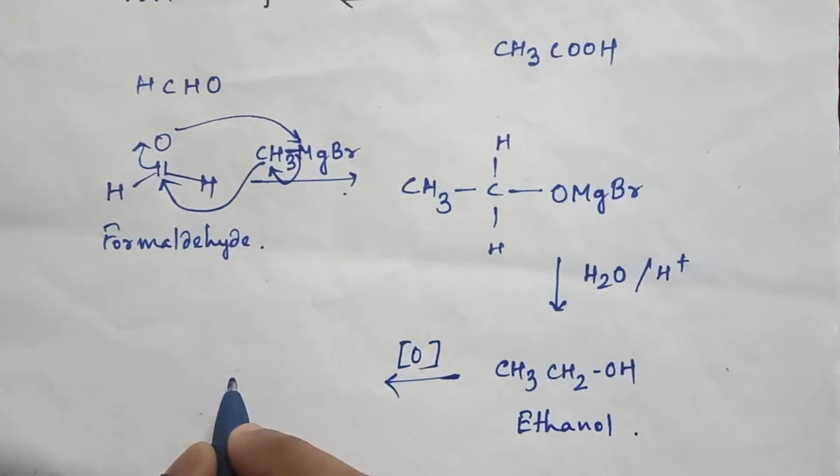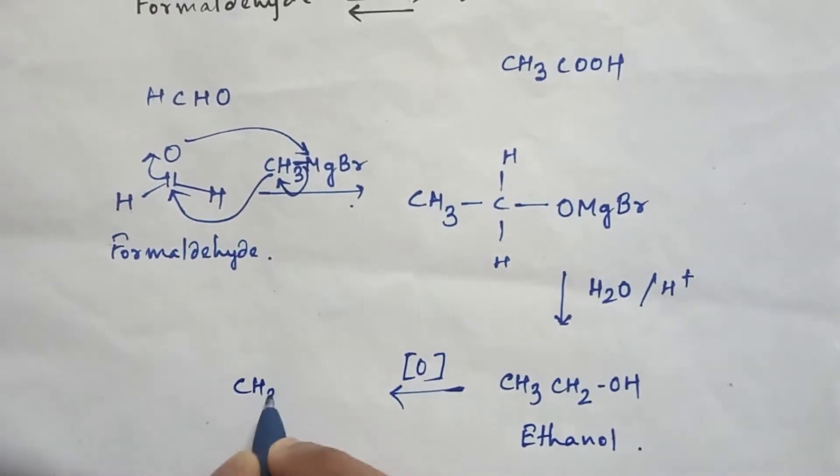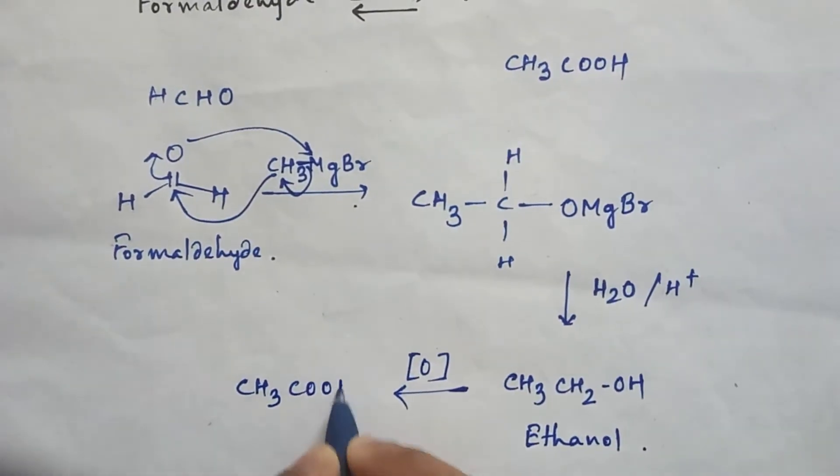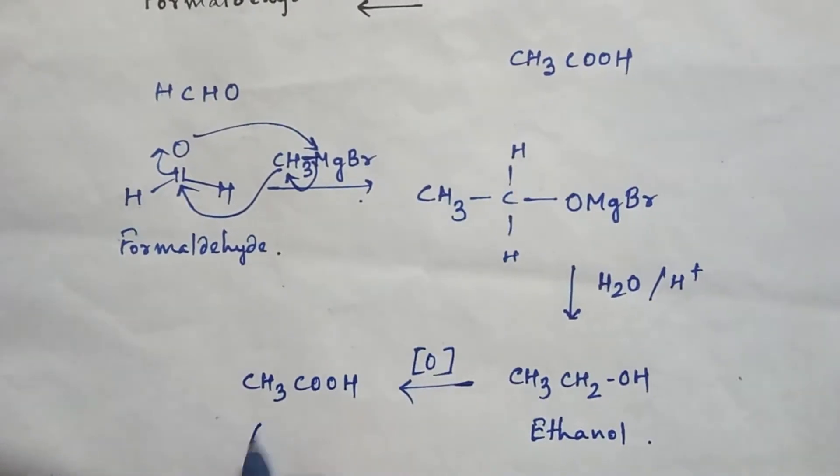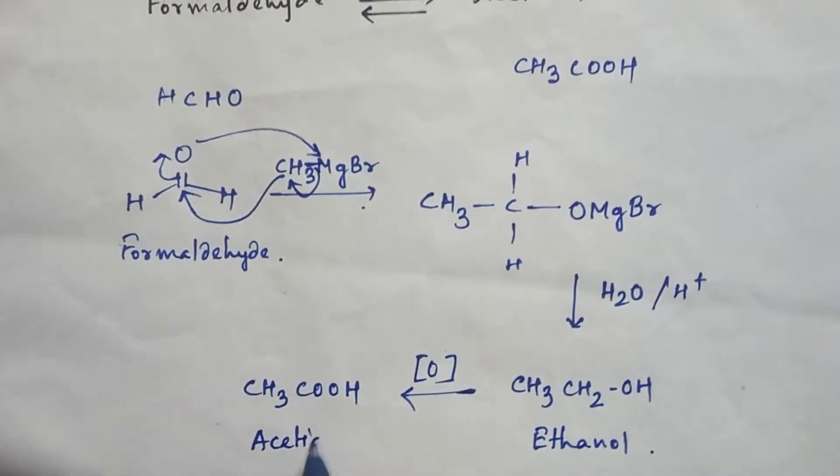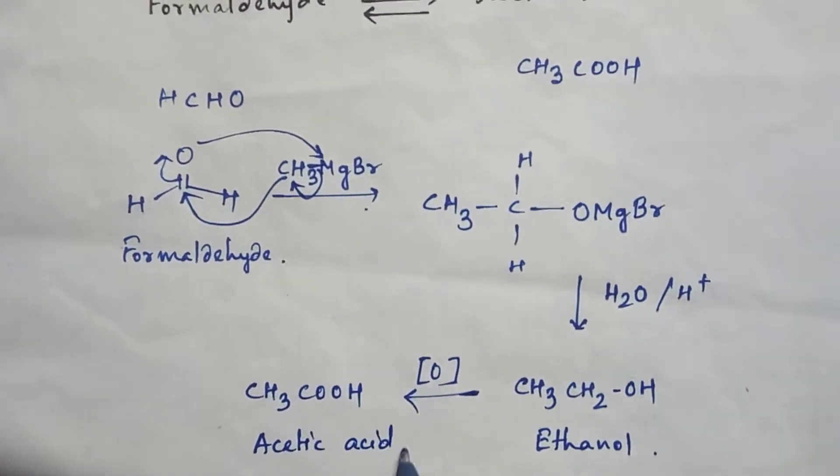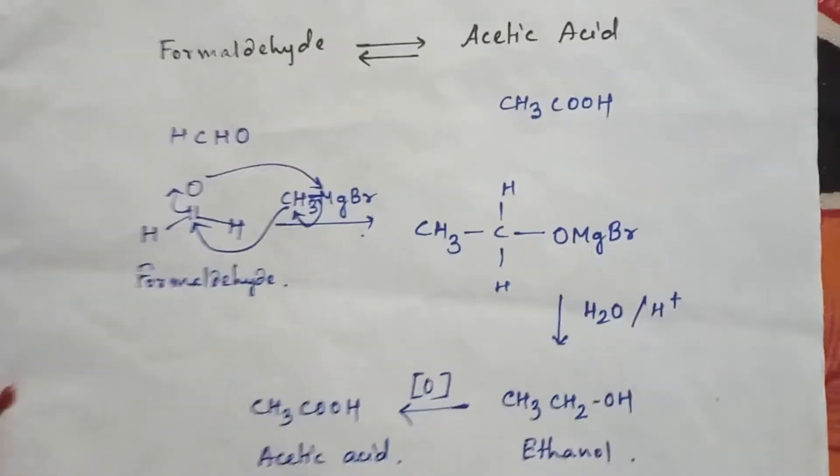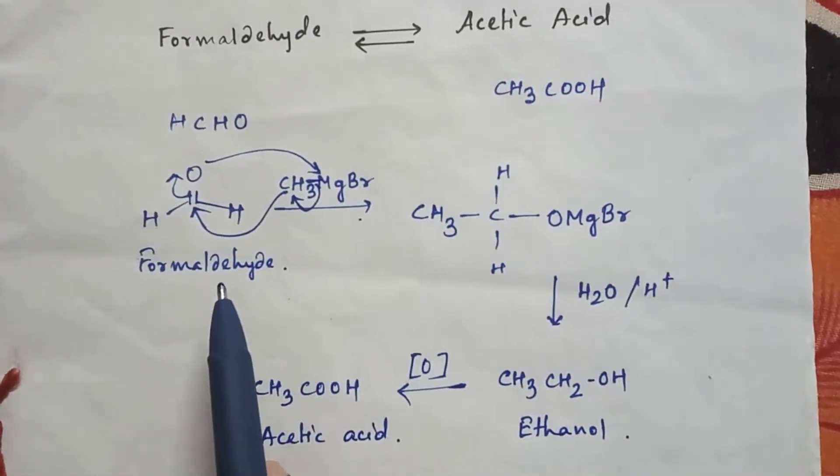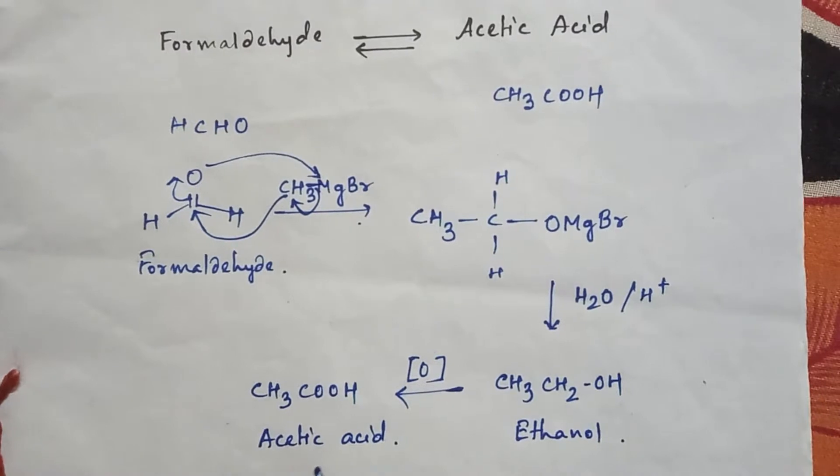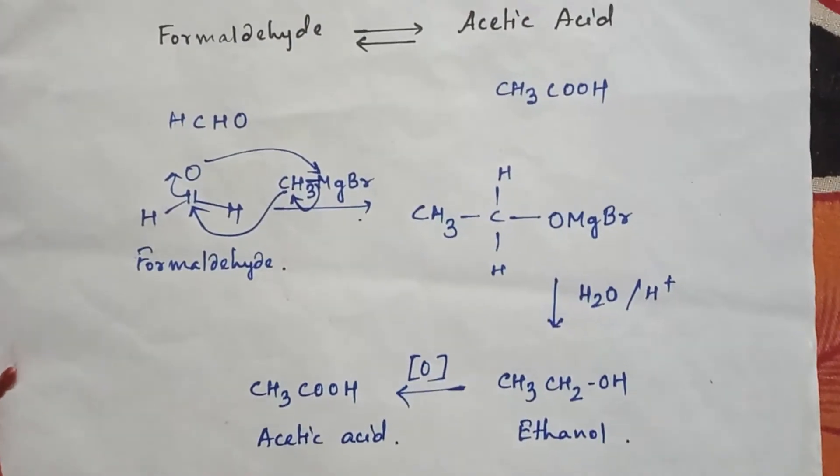So we will get the product CH3COOH, that is acetic acid. So this is the process of conversion from formaldehyde to acetic acid.